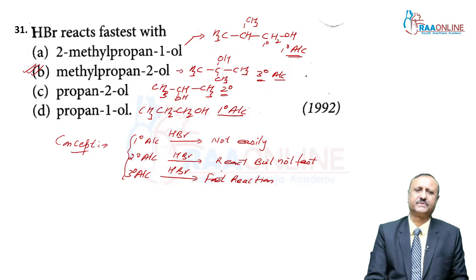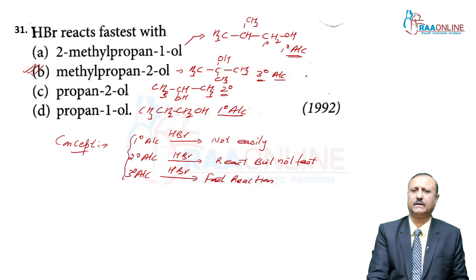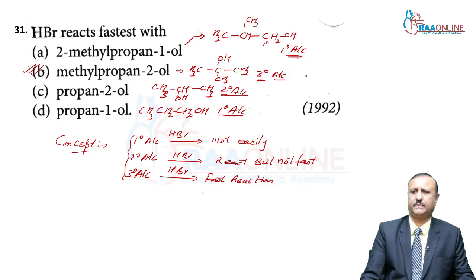Draw the structural formula of each alcohol and identify whether it is primary, secondary, or tertiary. Tertiary alcohol gives the fastest reaction with HBr. Option B (2-methylpropan-2-ol) is the tertiary alcohol, so HBr reacts fastest with it.